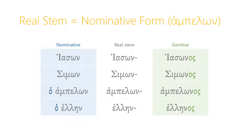One category of third declension nouns is very simple: the real stem of the noun is the nominative form. While in the majority of cases third declension noun stems change when you move from the nominative singular to other cases, there are a few like this where they don't change at all. All you have to do in subsequent cases is tack the case ending onto the nominative form. So for example, Iason — the real stem of Iason is Iason, and the genitive then is Iasonos.